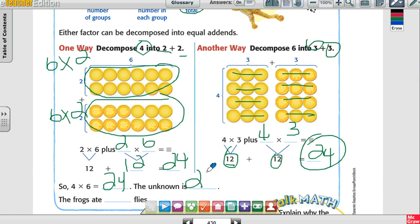So the unknown is 24. And how many frogs, the frogs ate how many flies all together? 24. 24 there.